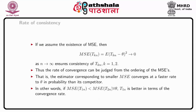However, the rate of convergence is not easy to compute theoretically. If we assume the existence of MSE, then MSE of TKn equals the expected value of (TKn minus theta) squared, which tends to 0 as n tends to infinity, ensuring consistency of TKn for K equal to 1 and 2. Thus, the rate of convergence can be judged from the ordering of MSEs — the estimator corresponding to the smaller MSE converges at a faster rate to theta in probability. But such a comparison involves huge calculation and hence lacks practical feasibility.